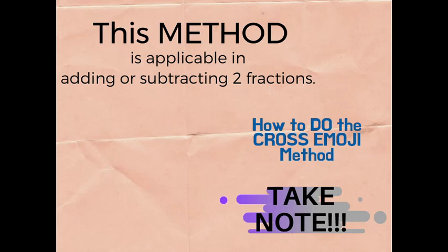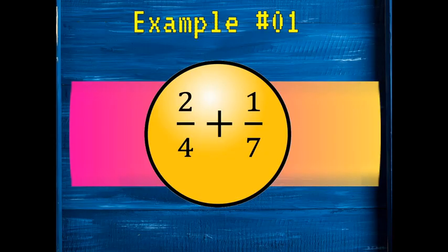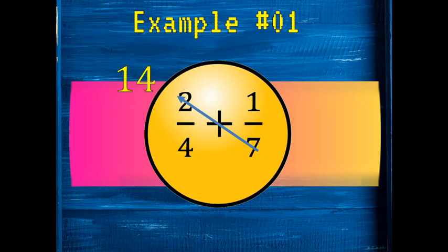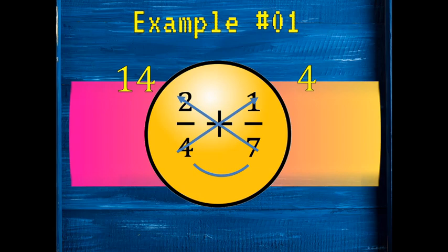Let's use the same example: 2/4 plus 1/7. Cross multiply: the numerator of the first fraction times the denominator of the second fraction — that's 2 times 7, which equals 14. Then cross multiply the other way: the denominator of the first fraction times the numerator of the second — 4 times 1 equals 4. To get the denominator, multiply both denominators: 4 times 7 equals 28.